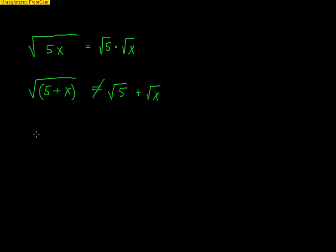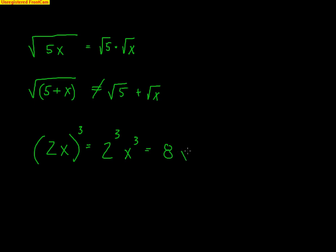Also be careful about where parentheses are when dealing with exponents. If I have (2X) to the third, the parentheses mean the 2 gets cubed and the X gets cubed: 2 cubed is 8, so this becomes 8X cubed. But if I just have 2X cubed with no parentheses, that cubed is only on the X, not the 2 — so it stays as 2X cubed. Be very careful with that rule.